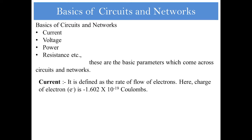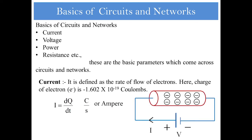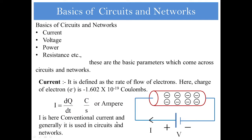Let us start with current. Current is technically defined as the rate of flow of electrons. The charge of an electron is minus 1.6 into 10 to the power of minus 19 coulombs. Mathematically it can be given as i = dq/dt. The units will be coulombs per second, or you can take the unit as an ampere. From the figure you can see the flow of electrons and the current direction moving from positive to negative. I is treated as conventional current and is generally used in circuits and networks.